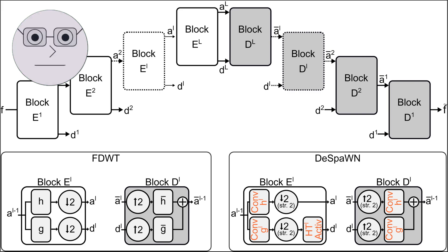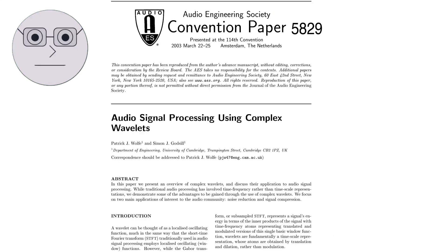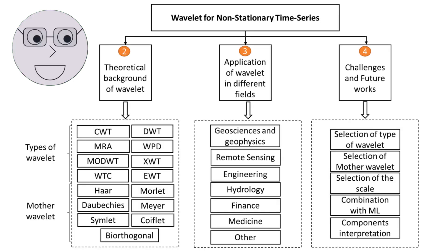In the next segment, we will explore the properties of wavelets in more detail. Wavelets have several important properties that make them useful in signal processing and image compression.